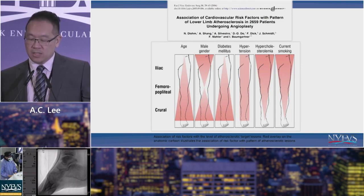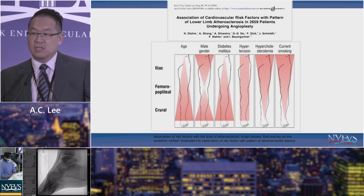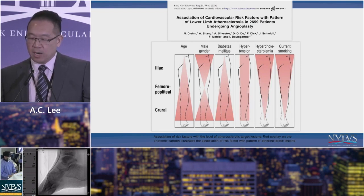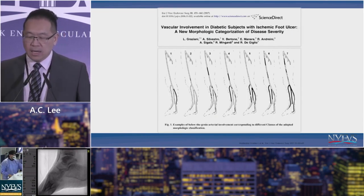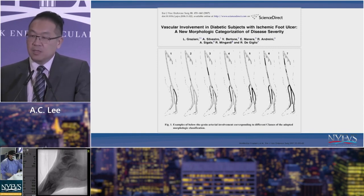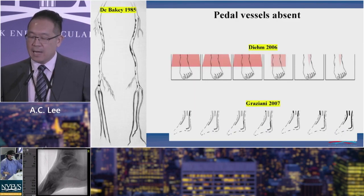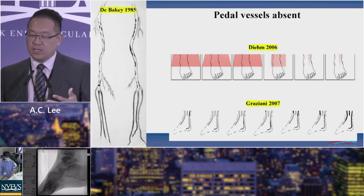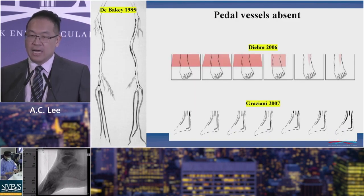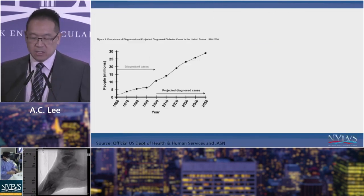With the explosion of diabetes, diabetic patients are typically isolated into the tibial vessels, and they represent a big population of chronic limb ischemia and critical limb ischemia patients. There's a paper out of Italy showing critical limb ischemia in diabetic patients describing all this tibial disease, but even in these papers the pedal vessels are absent from the drawings — nobody has really categorized pedal anatomy or risk factors.